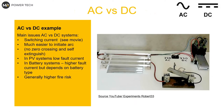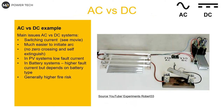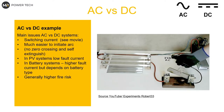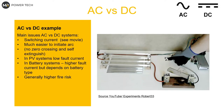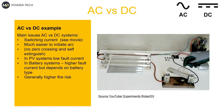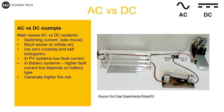The best example to show the difference — I found this from the Experiments Robert 33 channel, well recorded. The biggest issue in the past with DC was switching. Because AC changes 50 or 60 times per second, when it crosses zero we have a chance to switch it off, and the same applies to an arc — at some point it may be naturally disconnected.